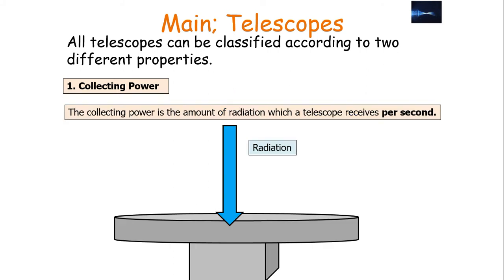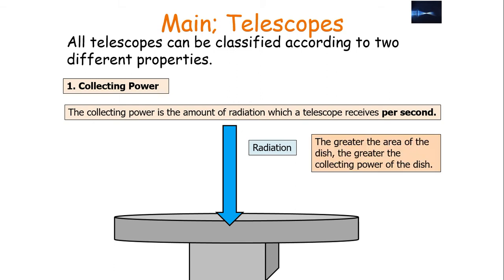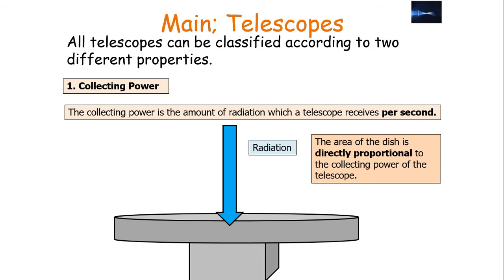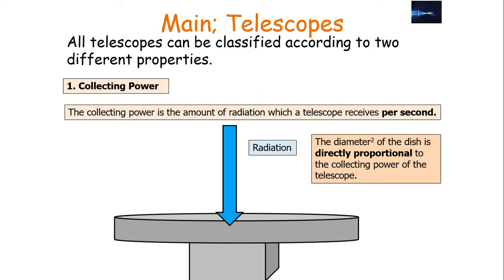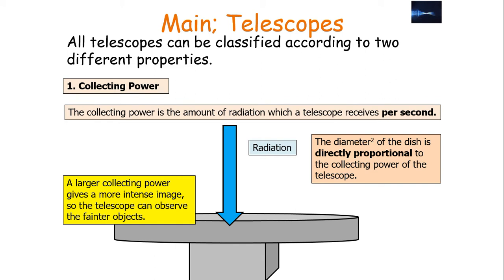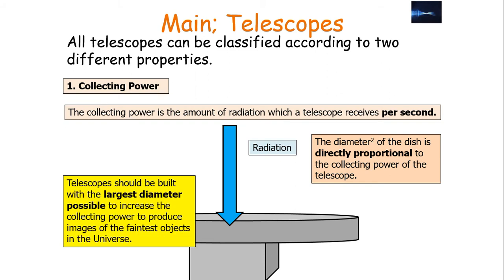The collecting power is the amount of radiation which a telescope receives per second. The greater the area of the dish, the greater the collecting power. The area of the dish is directly proportional to the collecting power, and since the dish is circular, the diameter squared is directly proportional to the collecting power. A larger collecting power gives a more intense image, so the telescope can observe fainter objects in the universe. Telescopes should therefore be built with the largest possible diameter to increase collecting power.